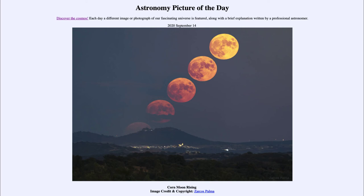The moon happens to look larger near the horizon, but in reality it does not. If you actually look at images or make measurements, we can see that the moon is the same size regardless of where it is positioned in the sky. It is something in our heads that makes us think the moon is bigger when it's closer to the horizon. We can see in this image that the moon really has not changed in size as it rises and gets further from the horizon.